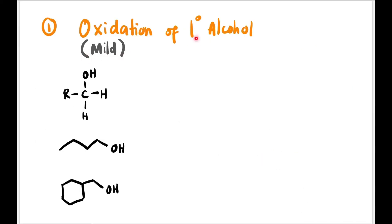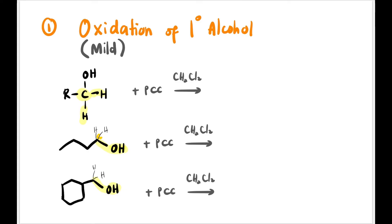Now let's go into detail. First, oxidation of primary alcohol — we must use mild oxidation. Let's confirm these are primary alcohols: a primary alcohol's carbon bearing OH is attached to only one other carbon, meaning it has two extra hydrogens at that carbon. We can see there are two hydrogens at the carbon with OH, so these are all confirmed primary alcohols. The reagent for mild oxidation is PCC with solvent CH2Cl2 — PCC stands for pyridinium chlorochromate. The first step in oxidation of alcohol is removing two hydrogens. Mild oxidation stops here: remove two hydrogens and we get C double bond O — H, which is an aldehyde.